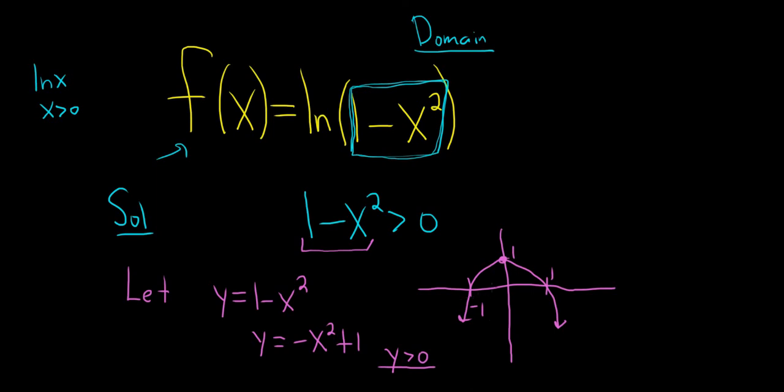So when is it above the x-axis? That's what it means to be positive. So in this case that would be here between negative 1 and 1, not including the negative 1 and 1 because it's 0 there.